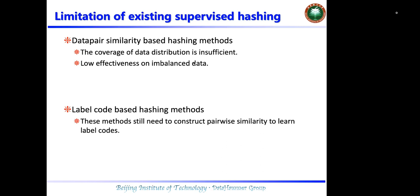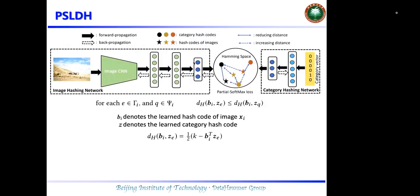Thus, these existing hashing methods cannot generate discriminative hash codes with semantic information preserved sufficiently. In our paper, we propose a novel deep hashing method called Partial Softmax Loss-Based Deep Hashing, which can generate discriminative hash codes with semantic information preserved sufficiently. This is the architecture of our proposed method, which contains two steps.